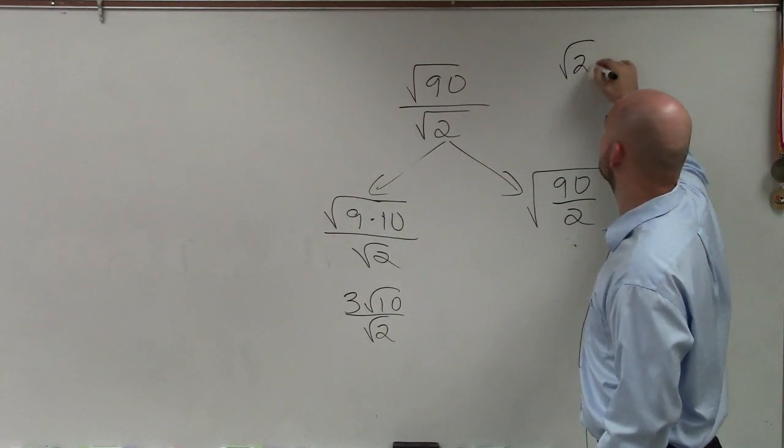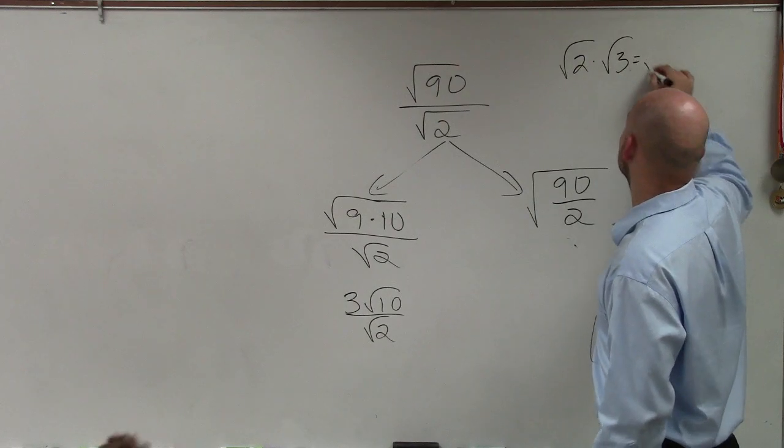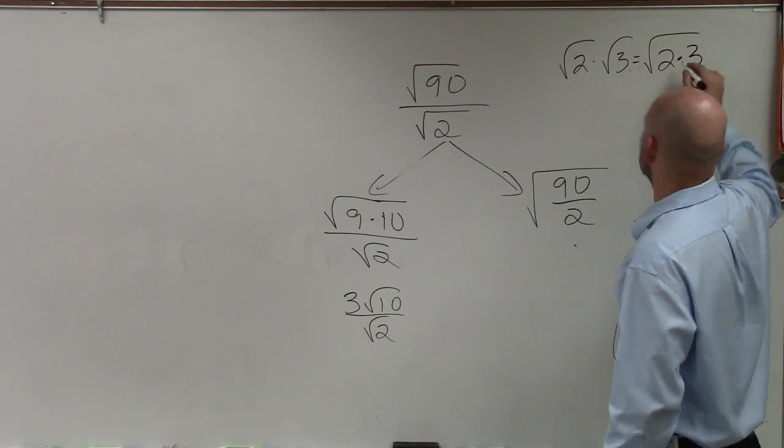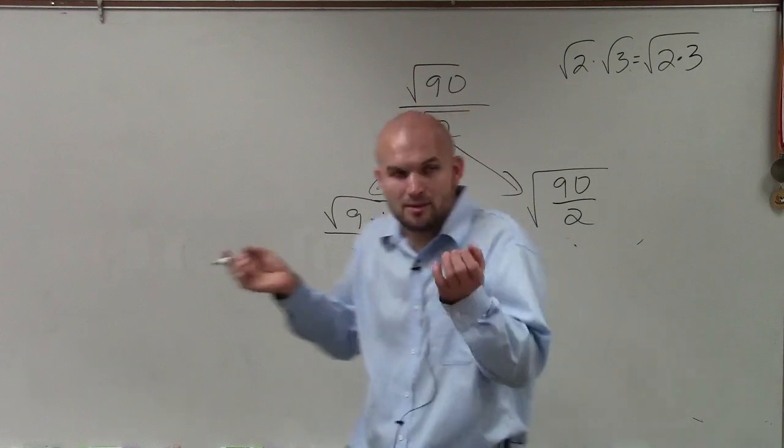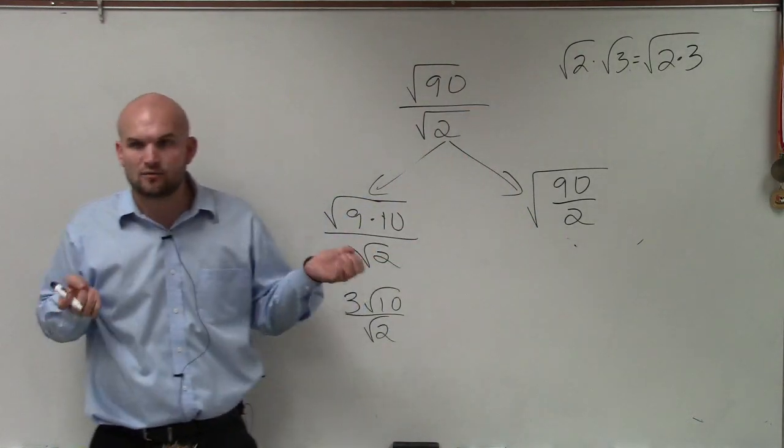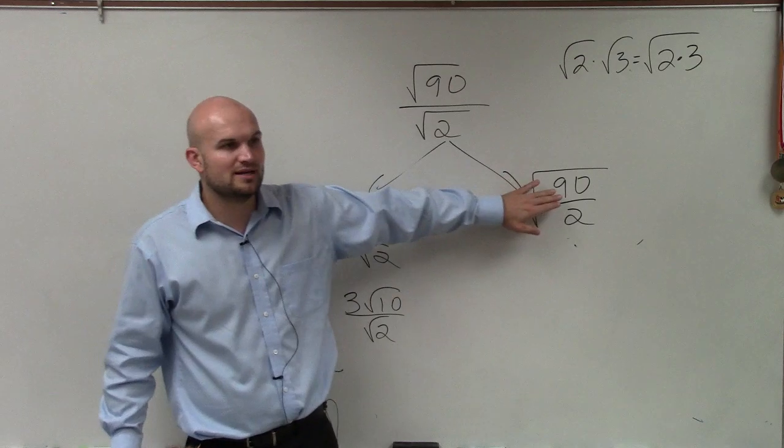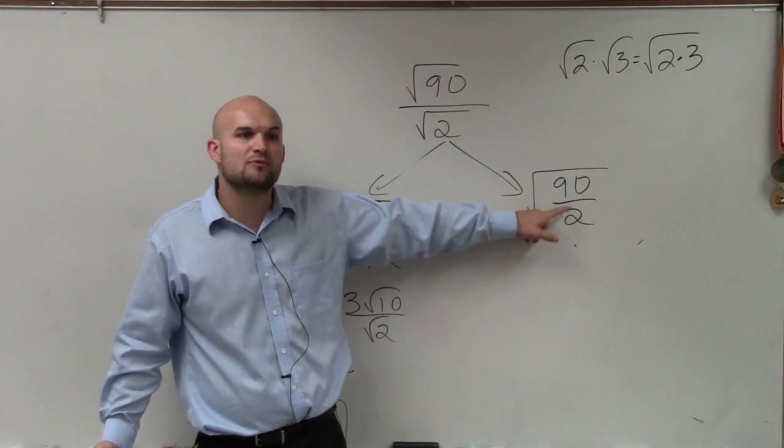Just like the square root of 2 times the square root of 3 is equal to the square root of 2 times 3. OK? Just understand that, remember I said we can multiply and divide our radicands. So if we're multiplying and dividing our radicands, we can just put them under the same radical.